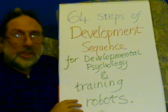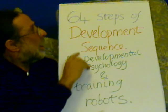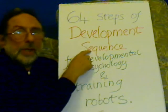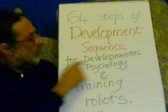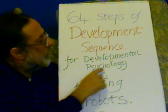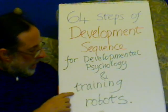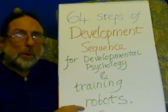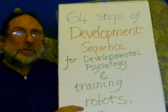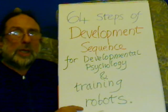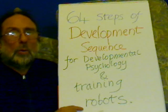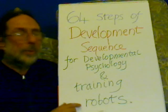The 64 steps are of the development sequence. This is the development sequence for developmental psychology and training robots. We can look at this developmental sequence in how we learn to build or construct reality, or how we learn to cope, deal, live with, and manipulate it.